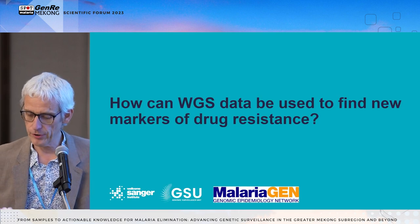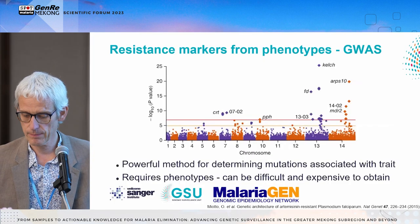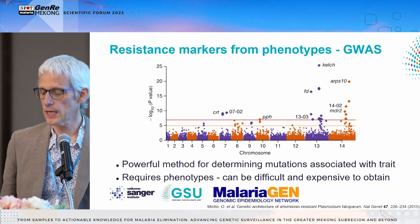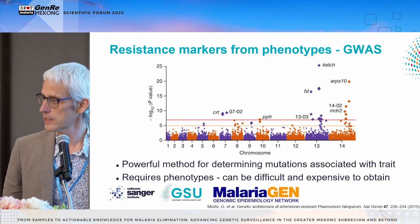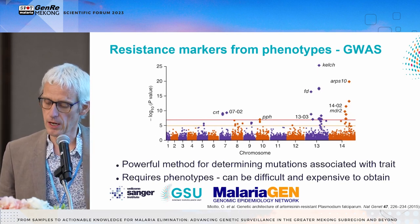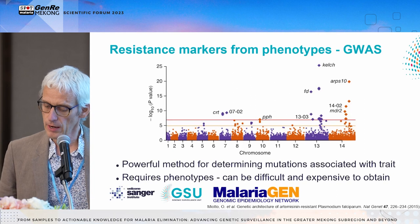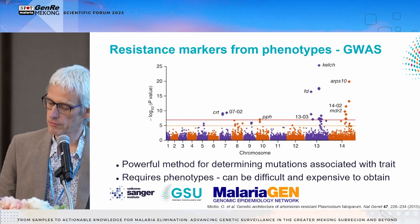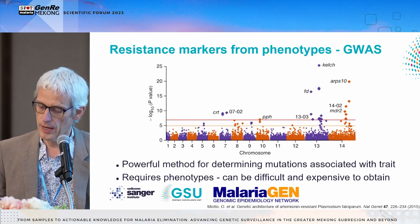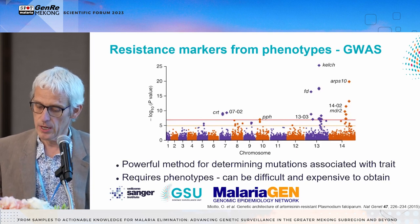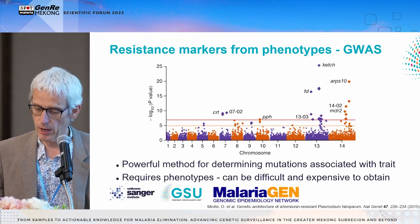How can whole genome sequence data be used to find new genetic markers of drug resistance? One way is to take two sets of samples — one resistant to a drug and another sensitive to that same drug — and look for differences in the genomes between these two groups. If a mutation is seen much more often in resistant samples than in sensitive samples, that mutation has likely been selected for and is therefore a good candidate as a drug resistance marker. This type of study is known as a genome-wide association study, or GWAS.